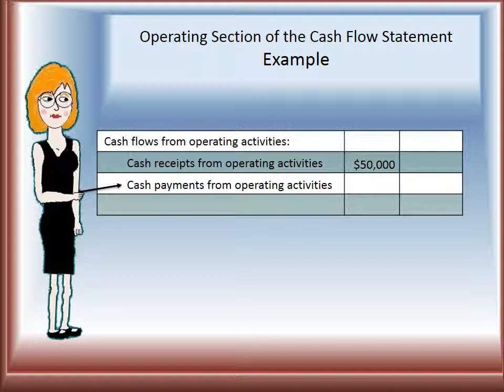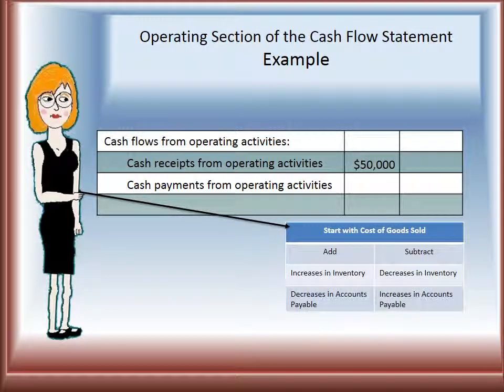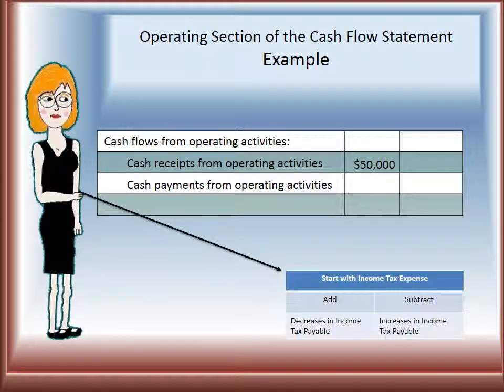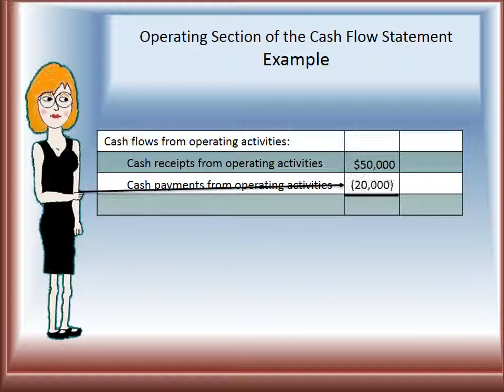Next we will do cash payments from operating activities. To arrive at this total, we will start with cost of goods sold, add increases in inventory and decreases in accounts payable, and subtract decreases in inventory or increases in accounts payable. We will also look at interest expense — adding decreases in interest payable or subtracting increases in interest payable. Next we would start with income tax expense, adding decreases in income tax payable and subtracting increases in income tax payable. We would add all three of these together to get the amount we subtract, which in this case was $20,000.